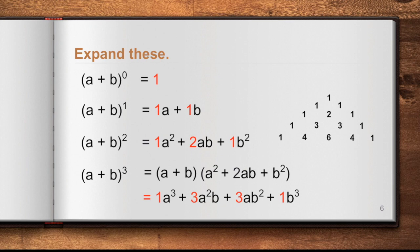Now notice the numbers — the coefficients — highlighted in red. For (a + b) to the power of 0, the coefficient is 1. Notice that all of those coefficients are actually the same as the numbers in our Pascal's Triangle. This is what Pascal's Triangle is for: the numbers correspond to the coefficients in the binomial expansion. The top of the triangle corresponds to (a + b) to the power of 0. Let's summarize that.